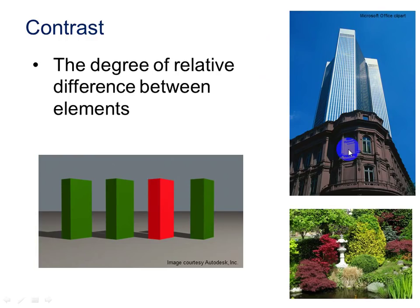The texture of this building is different from the texture of this building — that's creating contrast. And there are different styles of the two buildings: we have a Victorian style high-rise here, and then a more modern sleek skyscraper. This image at the bottom shows contrast between the natural and the man-made objects, as well as a contrast in texture — the leafy textures around and the smooth texture of the ornament — versus the contrast in color with pinks, reds, and greens.